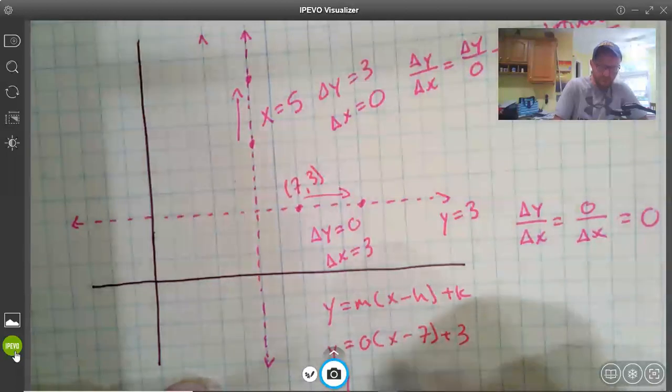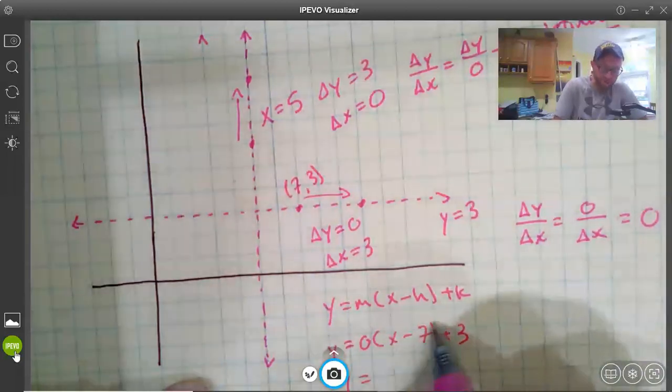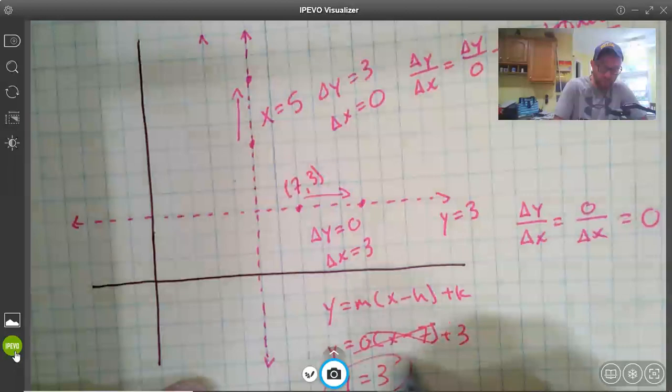Well, 0 times anything is going to be, I'm going to distribute this, the x and all just disappears, this whole term, and I'm just going to end up with y equals 3.